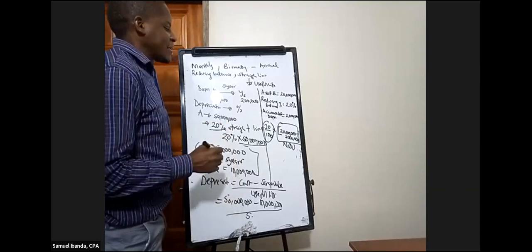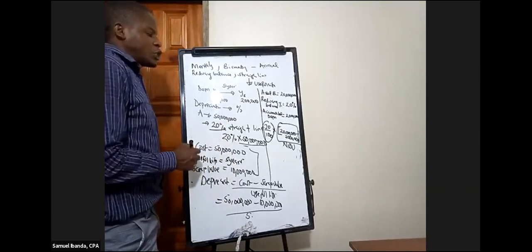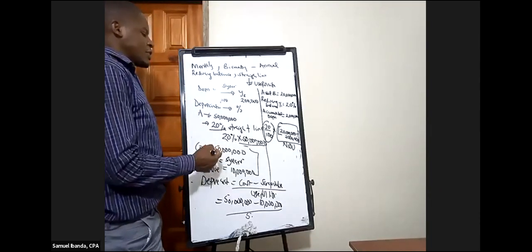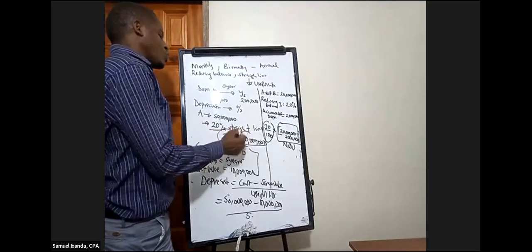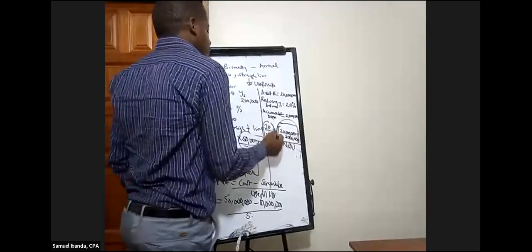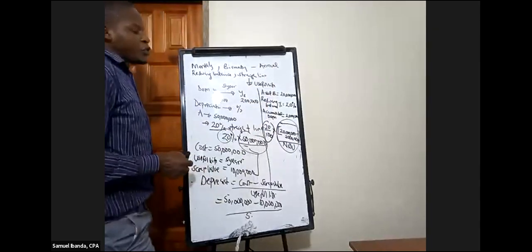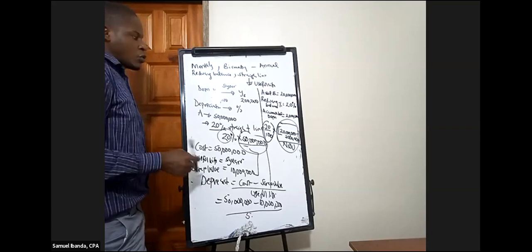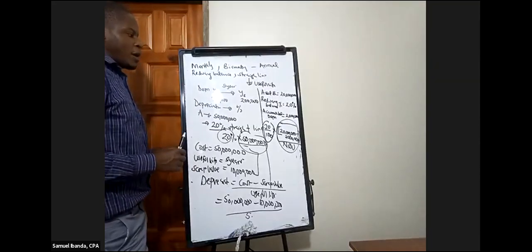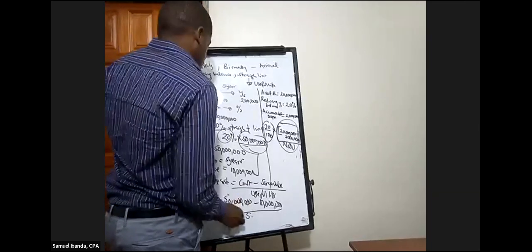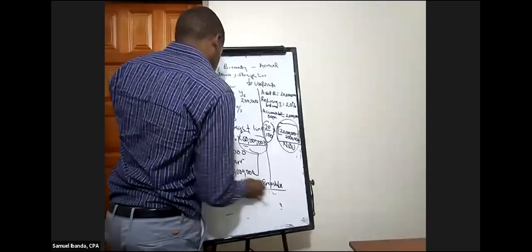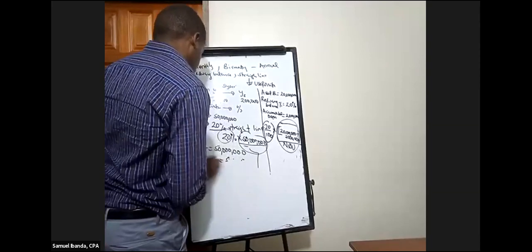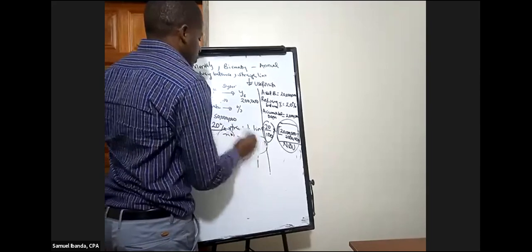The reducing balance method is based on the net book value, which is also called the carrying amount. That's where the key difference lies: straight line bases on cost, while reducing balance bases on the net book value, also called the carrying amount.